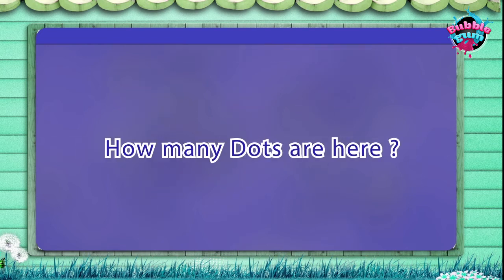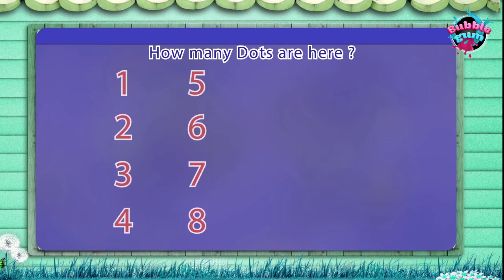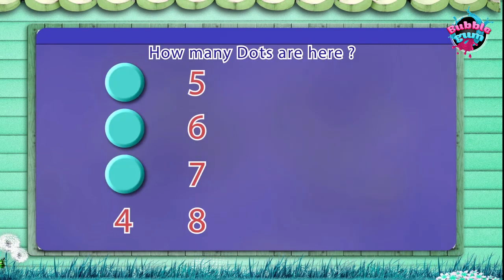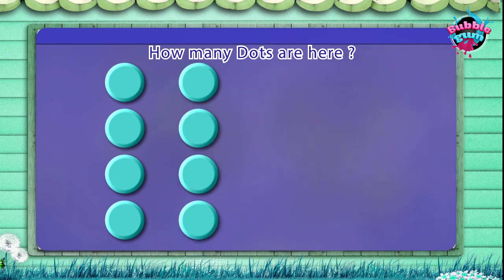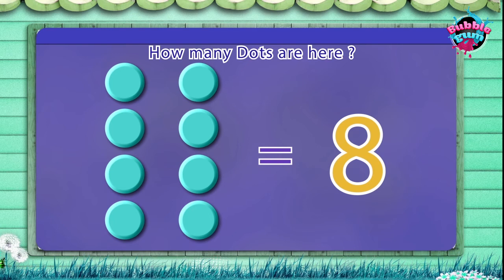How many dots are here? One, two, three, four, five, six, seven, eight. Eight.